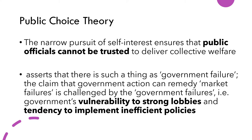Public choice theory is another application of rational choice theory. This theory notes that the narrow pursuit of self-interest ensures that public officials cannot be trusted to deliver collective welfare. If we assume that everyone is calculating and acting based on self-interest, then we can assume the same for politicians. With this, it can be said that politicians are vulnerable to strong lobbies, meaning their decisions and proposed policies can be influenced. For example, in a city where tourism is the main source of income, a mayor can be influenced to open borders to tourists despite the threat of COVID-19 to cater to businesses that get their income from tourists. The worst-case scenario is that politicians will be blinded by money and enforce policies that benefit only a select few, leading to government failures.